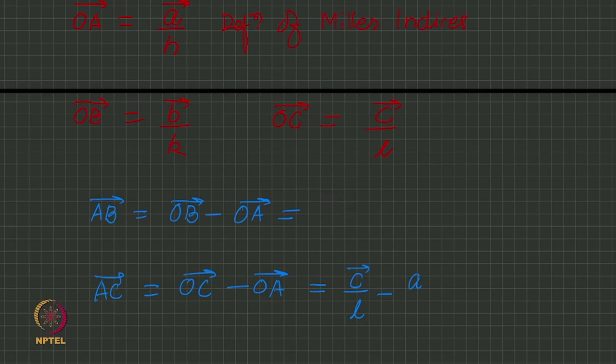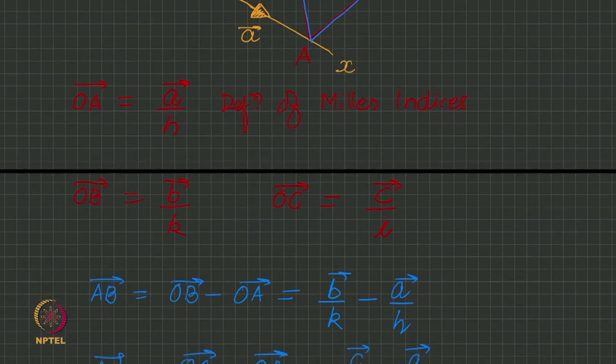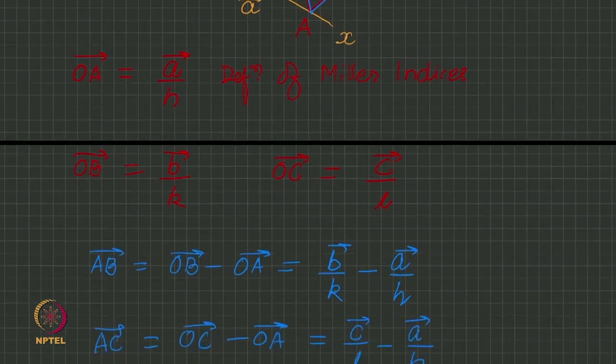This would be b by k, b by k minus a by h, and c by l minus a by h, just from here.